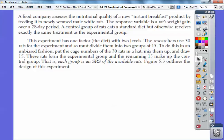The researcher uses 30 rats for the experiment and so must divide them into two groups of 15. To do this in an unbiased fashion because you don't want to pick all the males or all the females or all the whites or all the black rats or whatever. So here's one way. You can put the cage numbers of the 30 rats in a hat and mix them up and draw 15. And then these rats can be the experimental group and the remaining 15 rats can be the control group. That is each group is an SRS of the available rats.